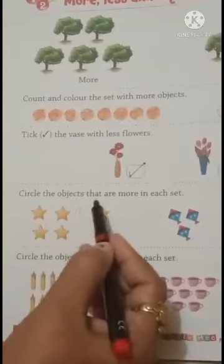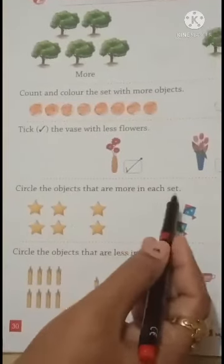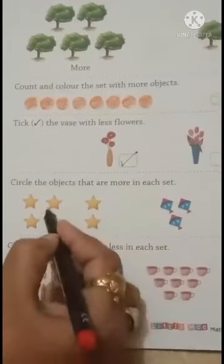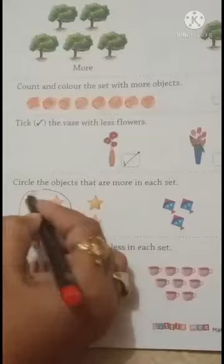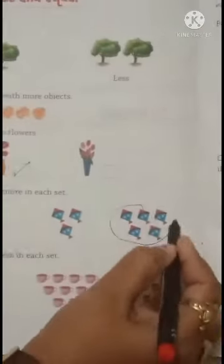Children, next question. Circle the objects that are more in each set. More means jada. See children, this is more. See children, this is more.